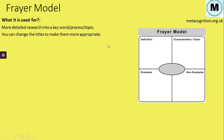You can also change the titles. Sometimes the default titles — definition, characteristics, draw, examples, and non-examples — just aren't the best topic areas for investigating that word or area. So you can change those titles if you need to, to make the Frayer Model a little bit more helpful.